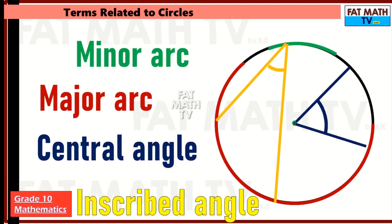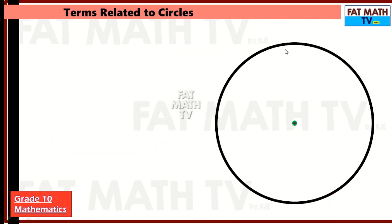The vertex of the inscribed angle is on the circle — the vertex is here. For the central angle, the vertex is the center of the circle. For the inscribed angle, the vertex is any point on the circle.